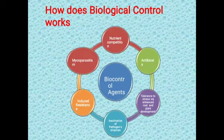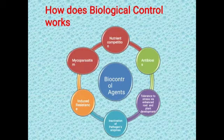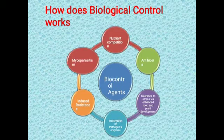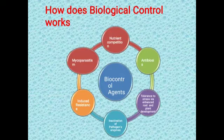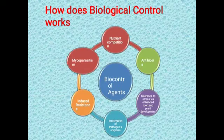Next, when we apply biocontrol agents, the plant tolerates stress due to enhanced root development. Then, inactivation of pathogen enzymes: Trichoderma viride and other biocontrol agents help increase the inactivation of enzymatic activity of harmful pathogens. Additionally, the resistance ability of the plant is induced or increased, because during plant growth the biocontrol agent secretes certain metabolites and antibiotics that quite increase resistance.